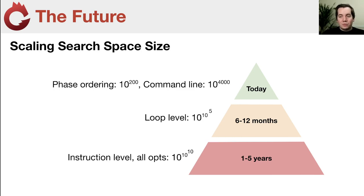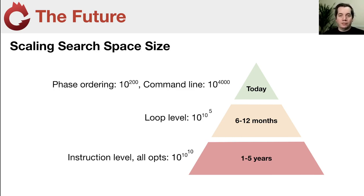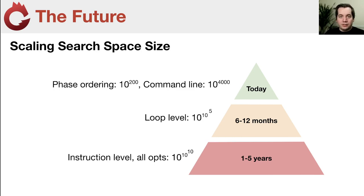In terms of where we're going: we are steadily increasing the size of our search spaces, digging deeper into the compiler. At the moment we're looking at somewhat modest problems like high-level choices such as phase ordering — choosing what optimization to run when — where the search space is only 10 to the 200. We're increasing the granularity of control, now starting to look at individual loop-level optimizations. Then we'll expand the scope further to every instruction-level optimization decision, so that eventually any time the compiler has to make a choice, we can expose that through our reinforcement learning environments.